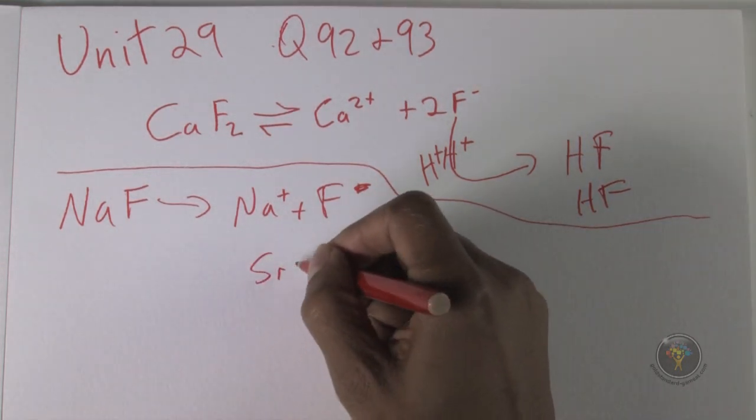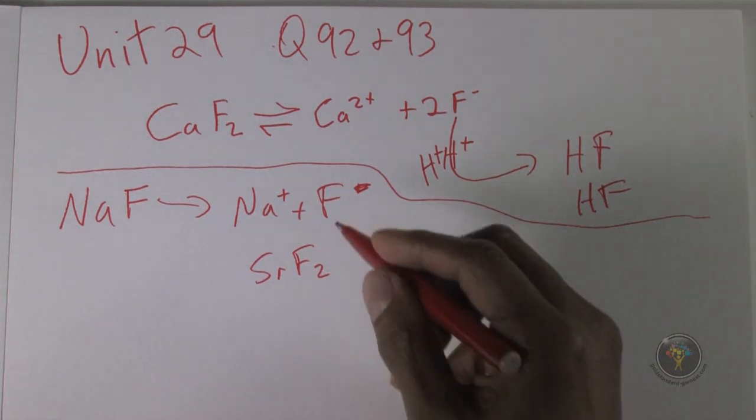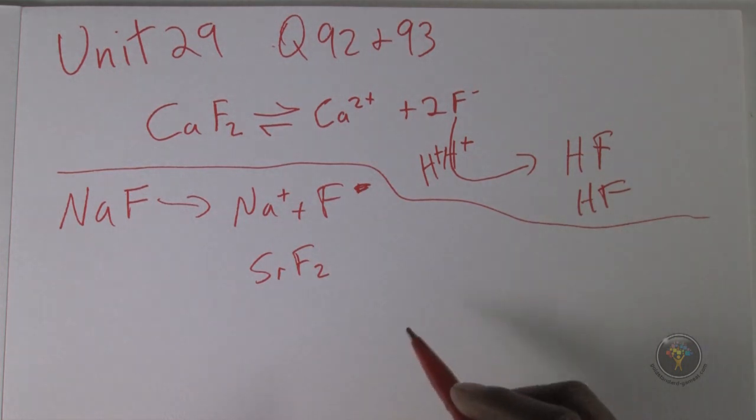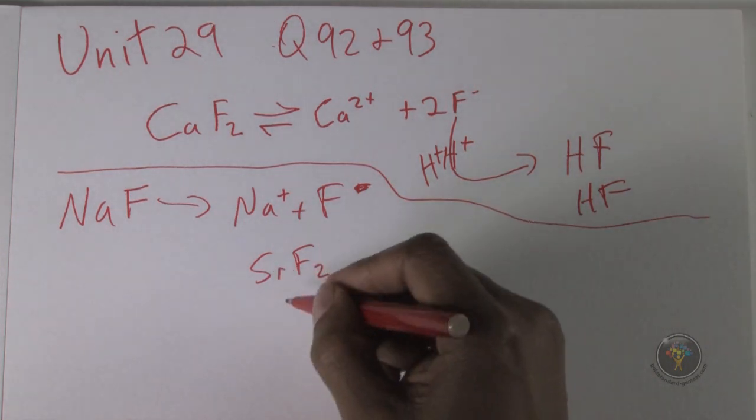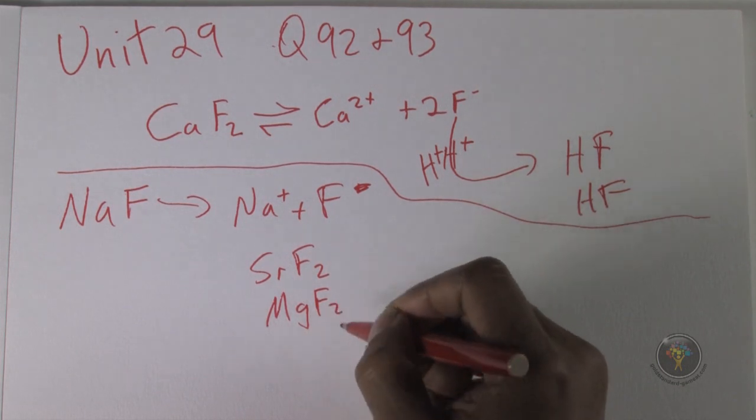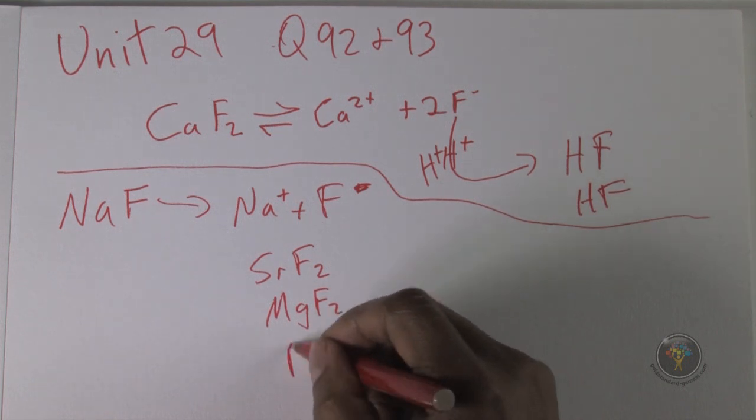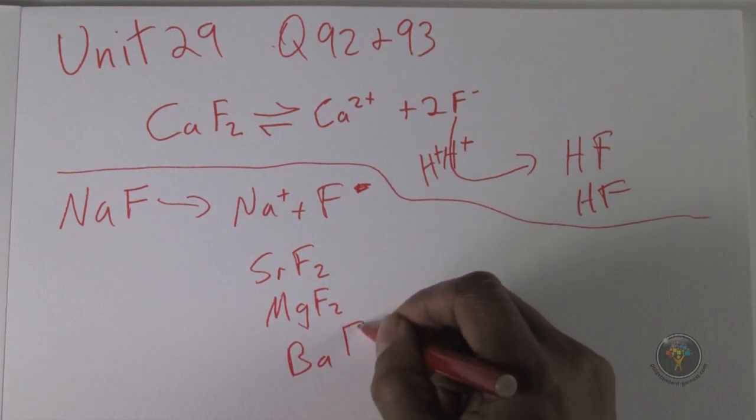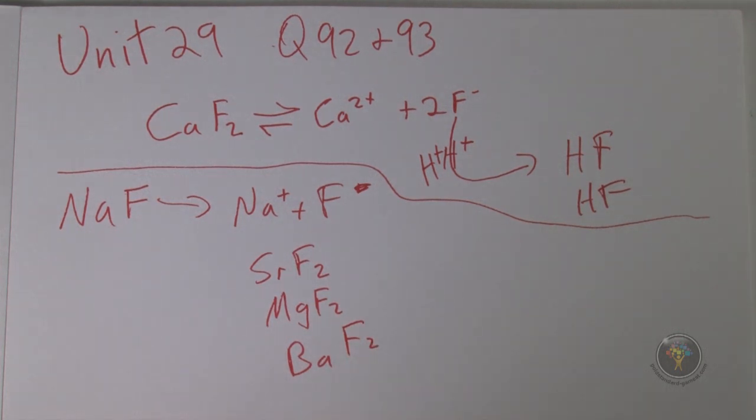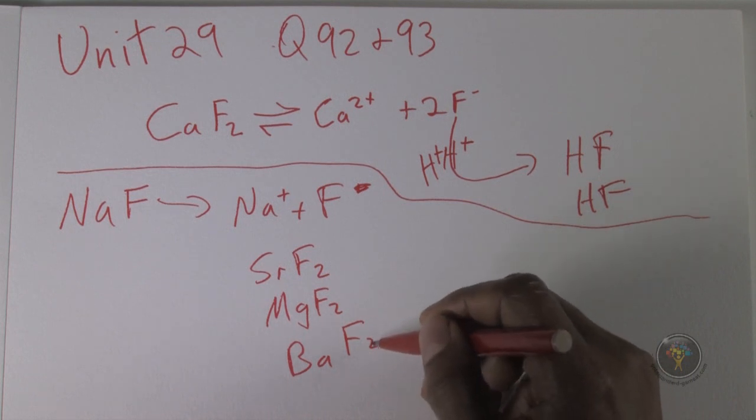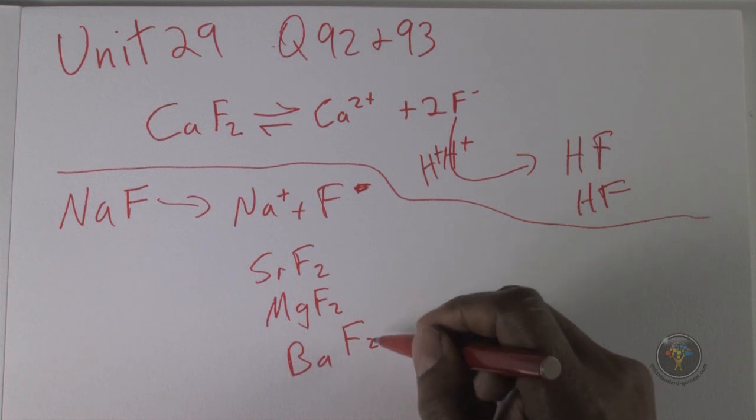We look for the lowest KSP value. The lowest number is SrF2—it's the least soluble and will precipitate first, most sensitive to changes. Second is MgF2. The highest number in the table is BaF2 at 10^-6, meaning it would be the last to precipitate because it's the most soluble.